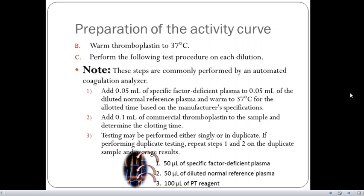And it is warmed up to 37 degrees Celsius for a little time. And then after that, we add 0.1 ml of the commercially available thromboplastin to the sample and we determine the clotting time. After that, testing may be performed either singly or in duplicates. If performing duplicate testing, repeat steps 1 and 2 on the duplicate sample and average the results.